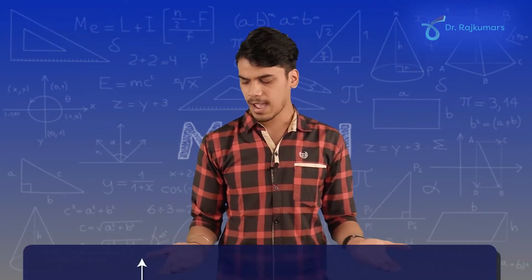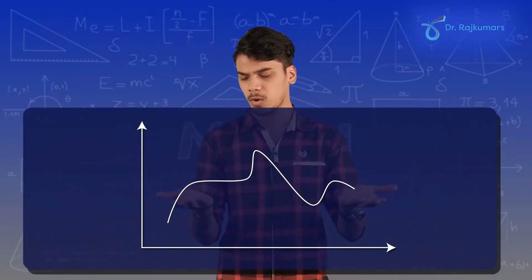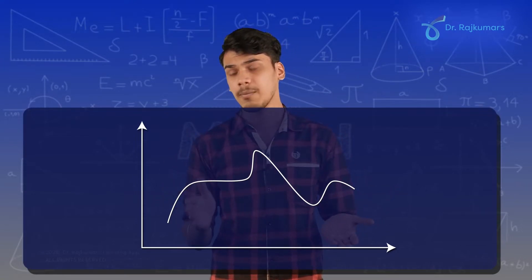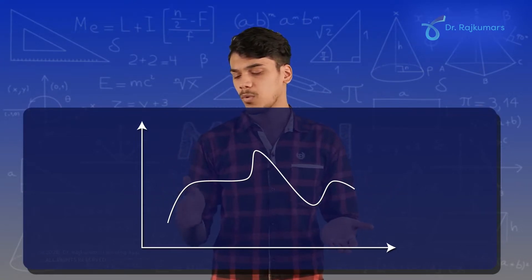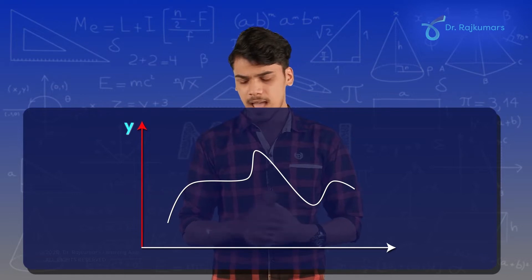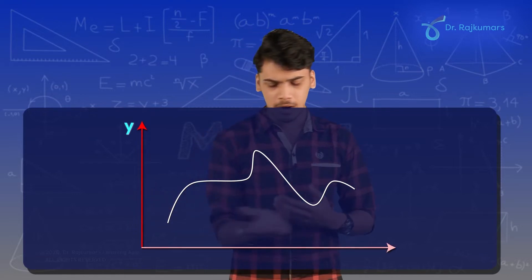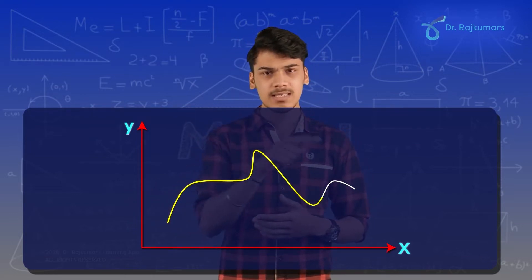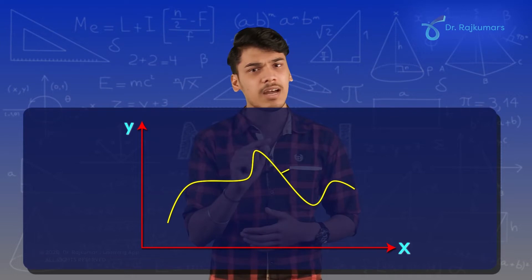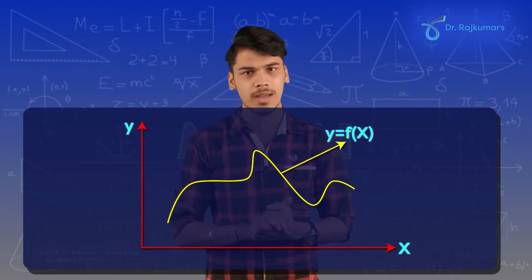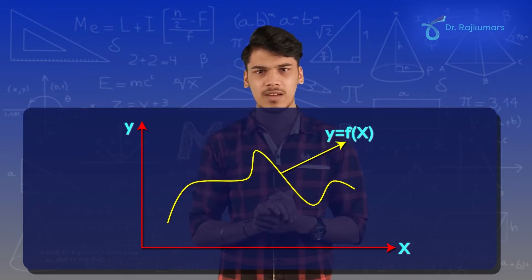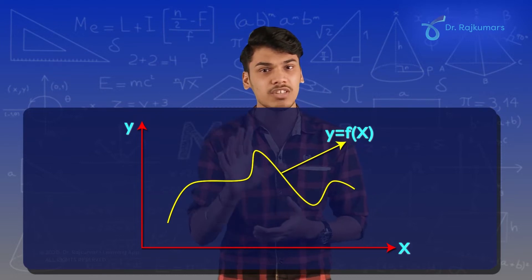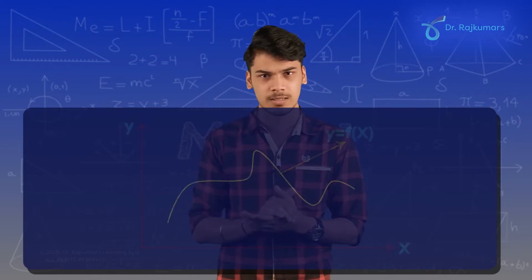Let me take an example. I have a graph here where the outputs are plotted along the y-axis and inputs are plotted along the x-axis. When I plot the graph, I get a curve which is continuous and name this curve as y = f(x), as there are no breaks at all. Thus, this function y = f(x) is continuous.